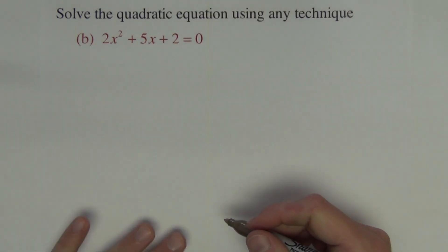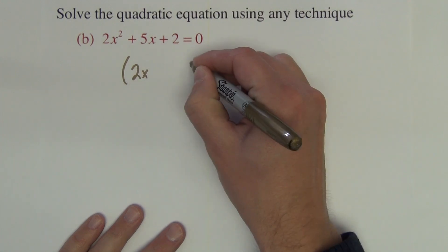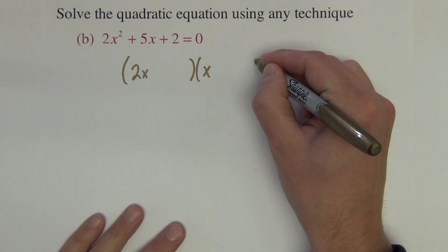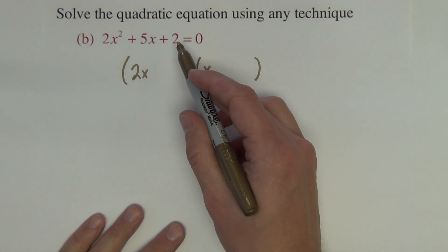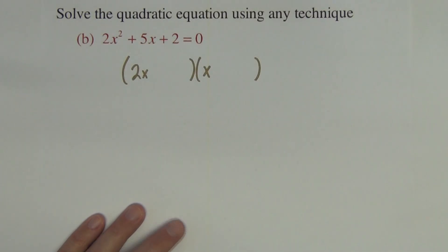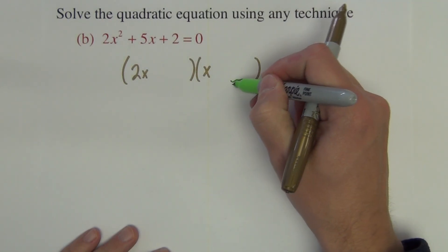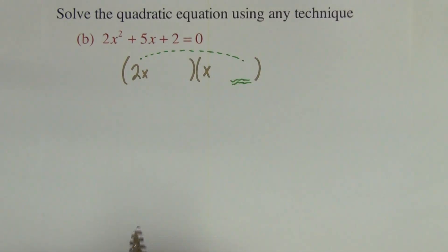Next question, the quadratic equation is already set equal to zero. So I can begin to see if this factors. This one, because of the 2x², we're going to have to use 2x times x. We're multiplying to 2, that's only 2 and 1. Again, remember that whatever number you place in this spot right here is going to get multiplied by 2.